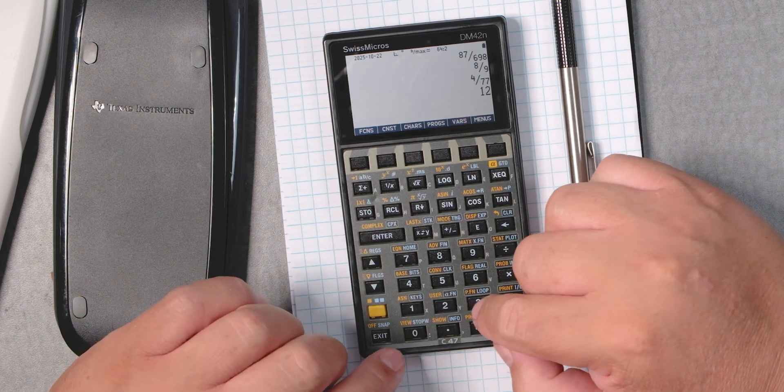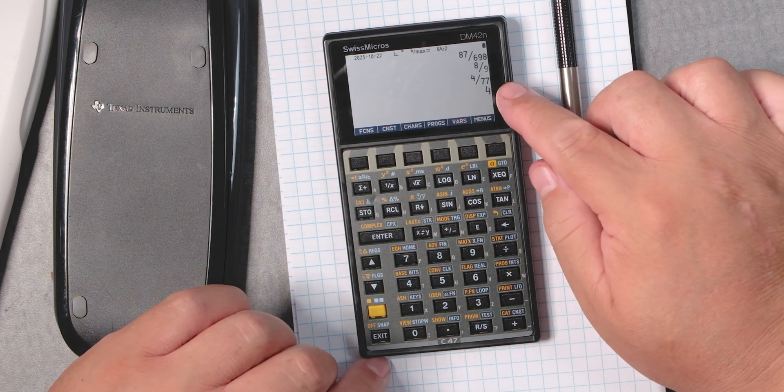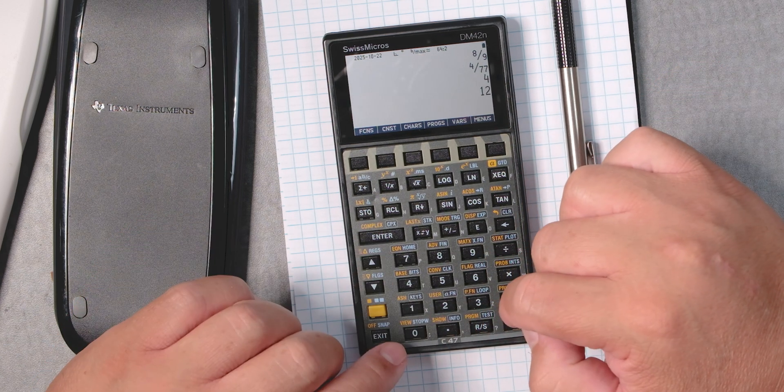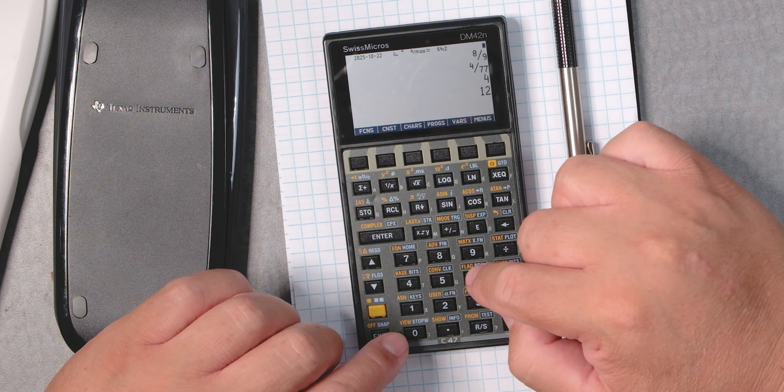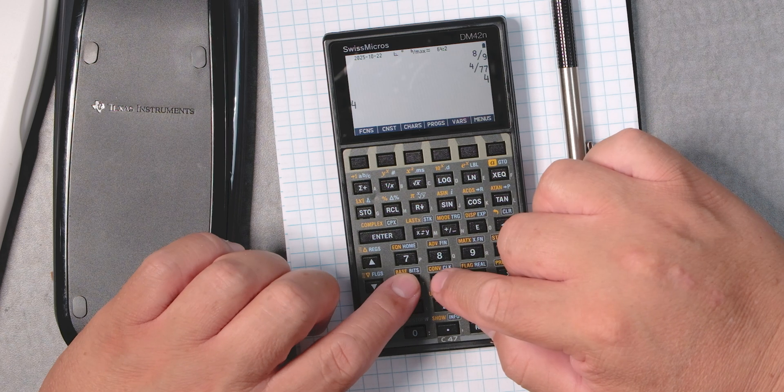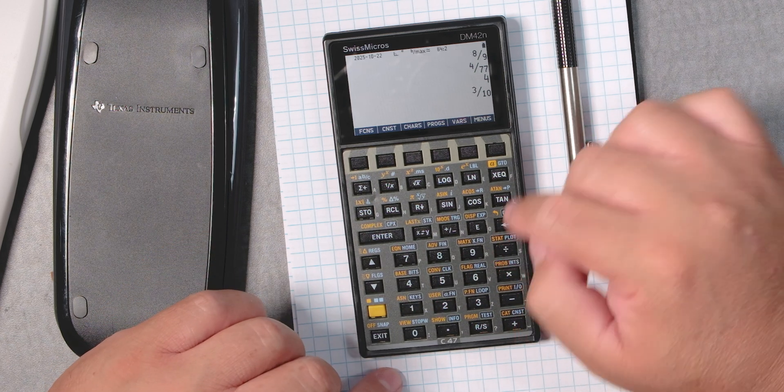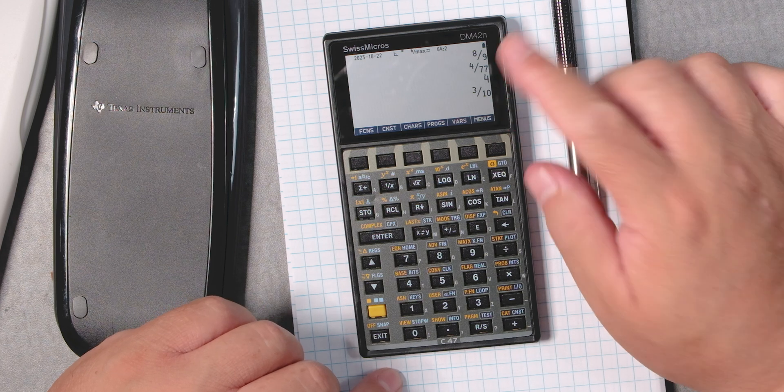12 enter 3. Divide, of course. Or 12 enter, let's say, 40. Right? It reduced the fraction. That's really neat.